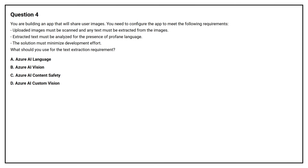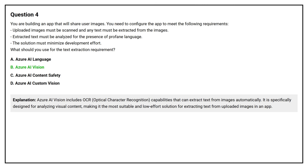Option B, Azure AI Vision. Option C, Azure AI Content Safety. Option D, Azure AI Custom Vision. The correct answer is Option B, Azure AI Vision. Azure AI Vision includes OCR optical character recognition capabilities that can extract text from images automatically. It is specifically designed for analyzing visual content, making it the most suitable and low-effort solution for extracting text from uploaded images in an app.